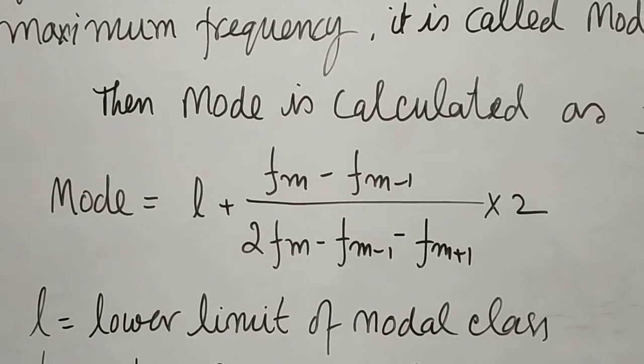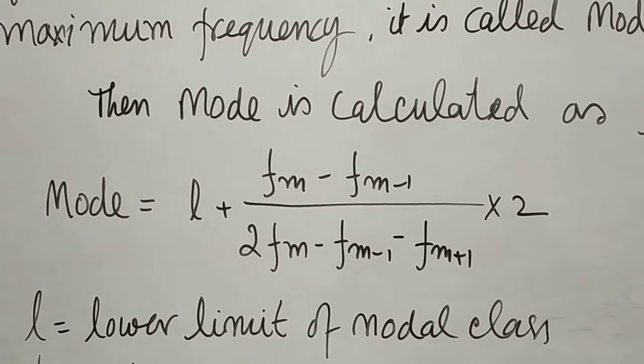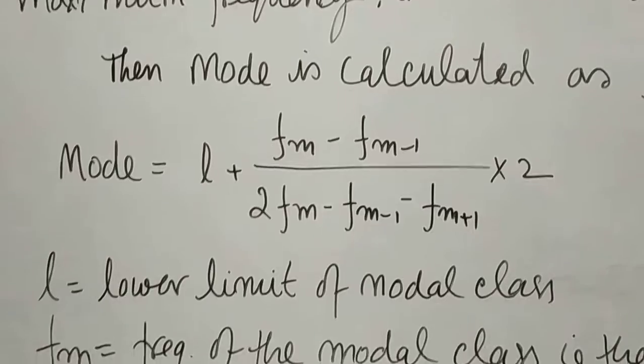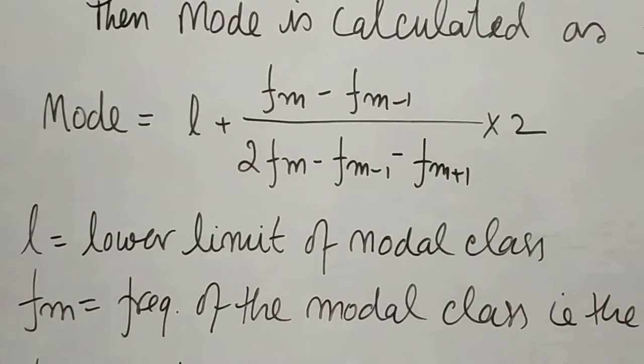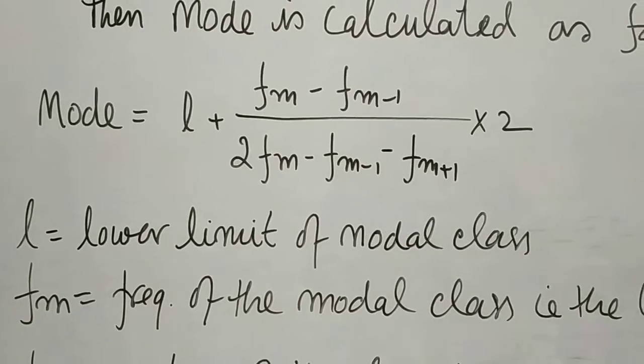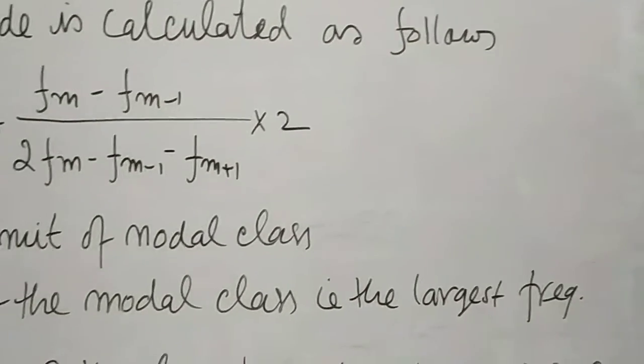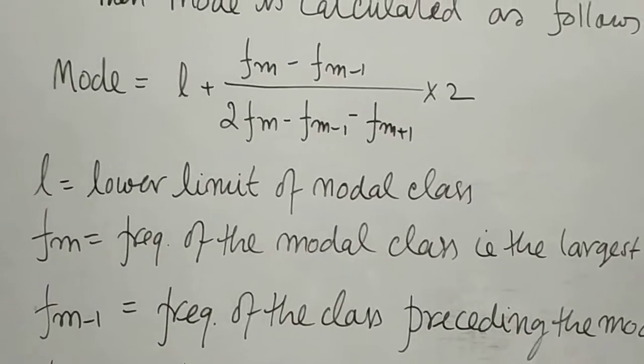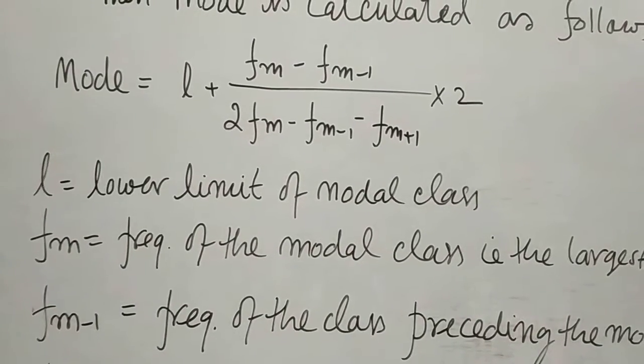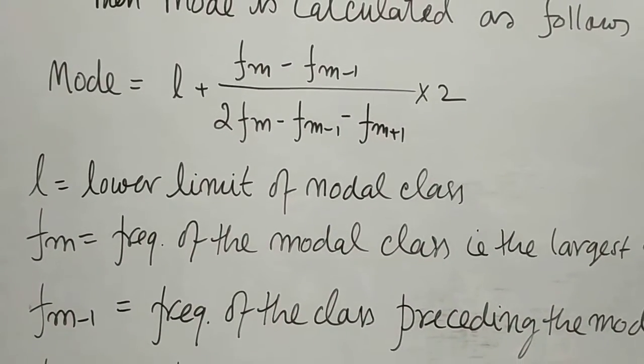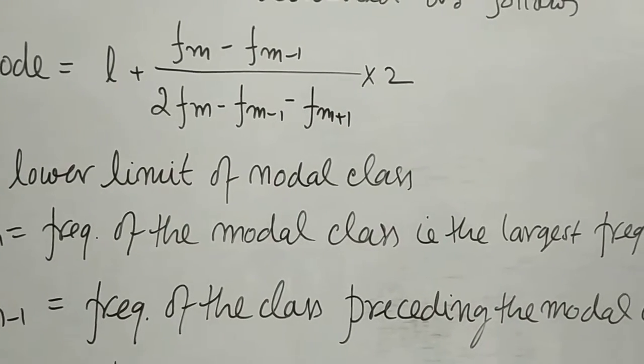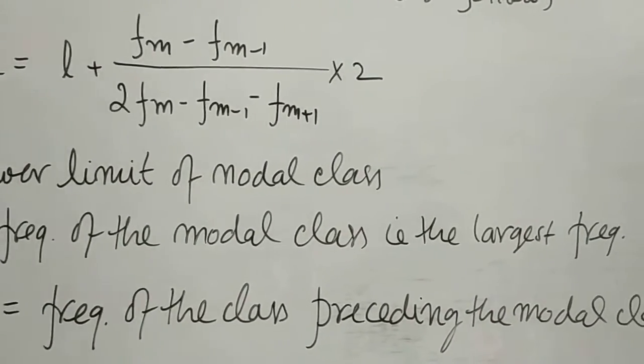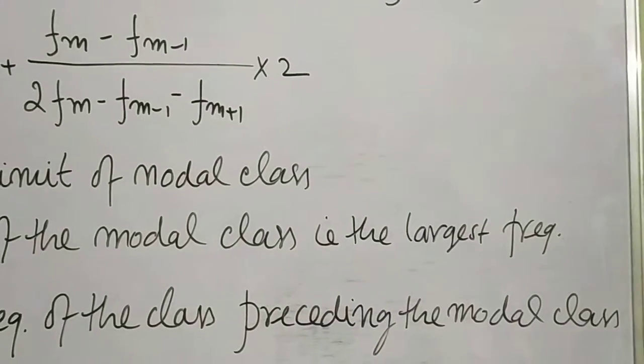fm is the frequency of the modal class, that is the largest one. Then fm-1, as the name itself or significance of this formula is, is the frequency of the class preceding the modal class.